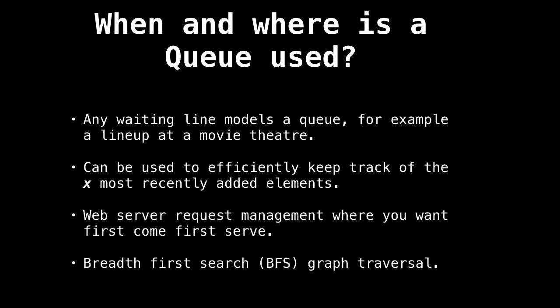Queues are also often used in server management. Suppose you have a web server idly waiting for requests, and at any given moment you can simultaneously serve up to five people but no more. If 12 requests come in at once, you can't process all of them immediately. You process the five you're able to and the remaining seven wait in a queue. Whenever you finish processing a request, you dequeue the next one and start processing it, until the queue is empty. Meanwhile, new requests just get added to the end of the queue.